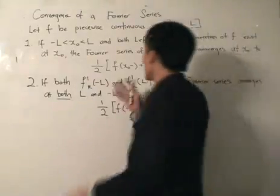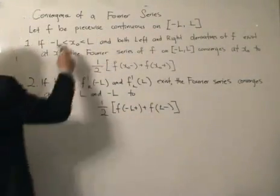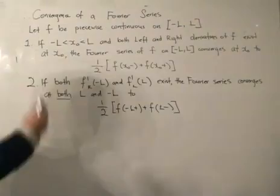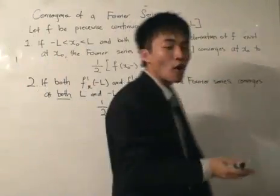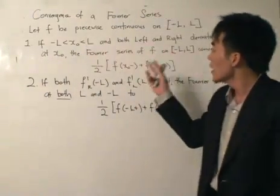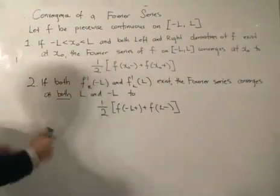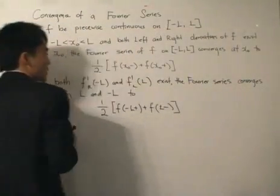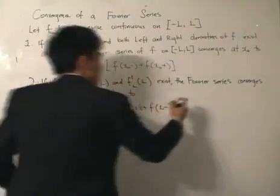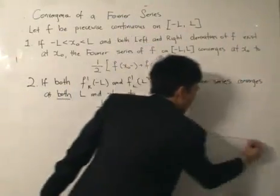So at some points the function is discontinuous. Values of x0 are discontinuous, and that's what it implies here. If we can think of a value of x0 which is discontinuous on a function, the Fourier series will still converge to a certain point. That point is going to be given by this expression. So let's just have a graphical representation — I think it's best that we do that.